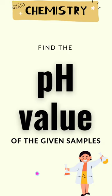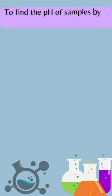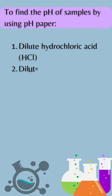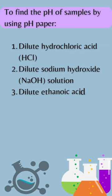Let's know how to find the pH value of the given samples. The aim is to find the pH value of the samples using pH paper. The samples are dilute hydrochloric acid, dilute sodium hydroxide solution, dilute ethanoic acid, lemon juice, water, and dilute sodium bicarbonate.